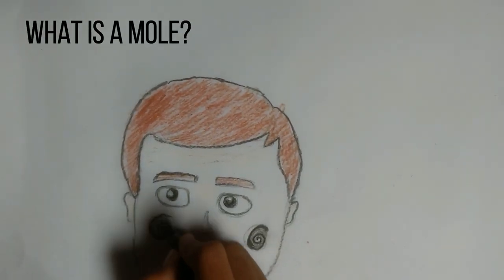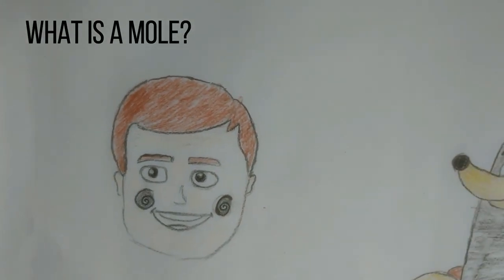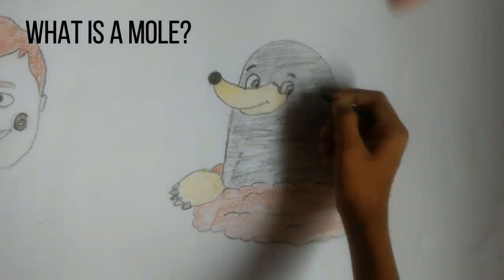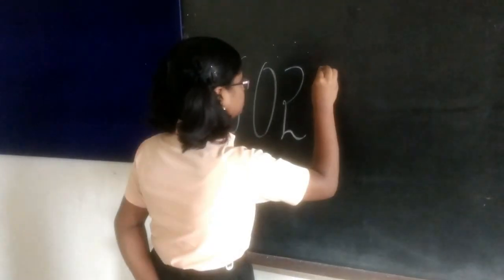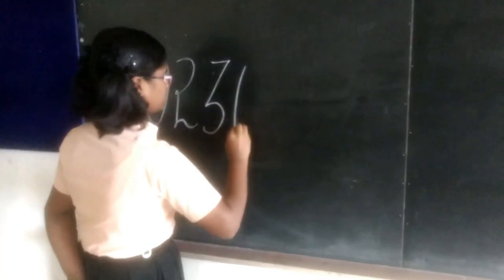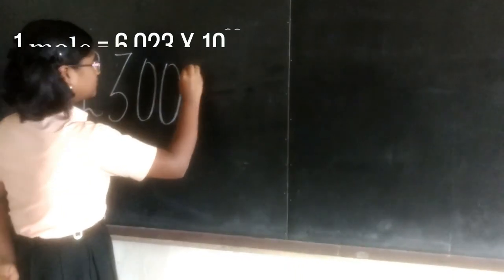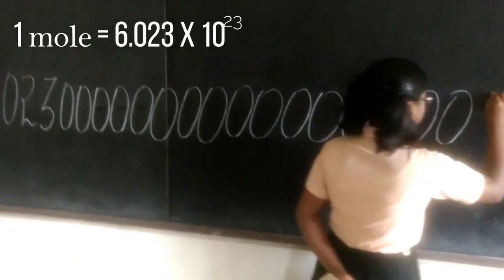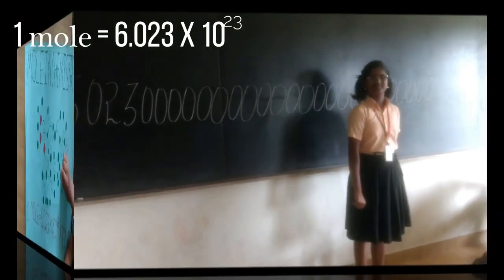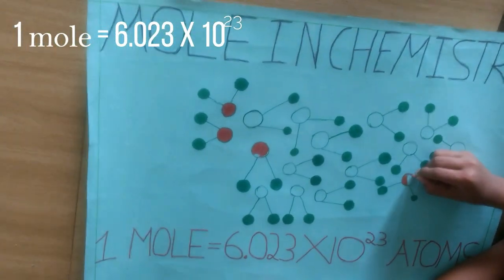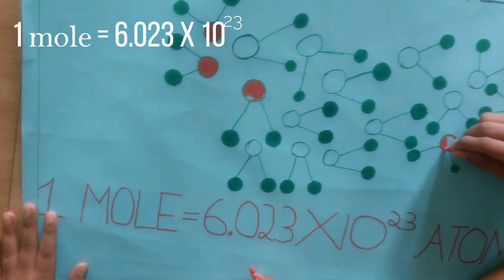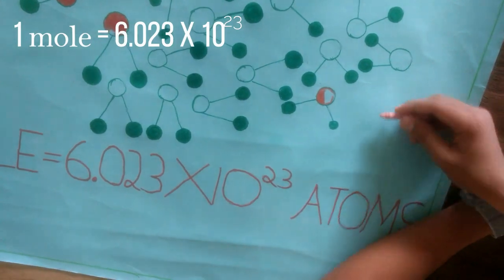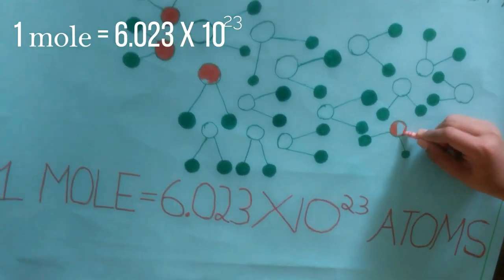No, it is not the wart on your face or the cute animal in your garden. Mole in chemistry is a very large number. One mole is 6.023 into 10 to the power 23 atoms or 6.023 into 10 to the power 23 molecules. We have given this very large number the name one mole.